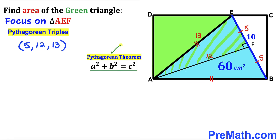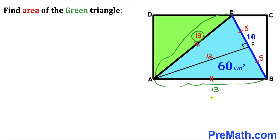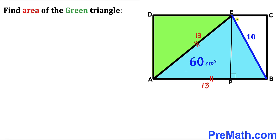You may also use the Pythagorean theorem to calculate this. Since AE equals AB, and AE is 13 cm, AB is also 13 cm.